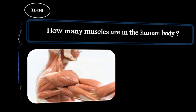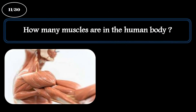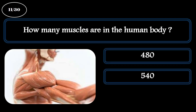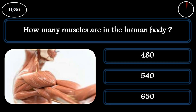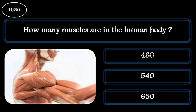Question 11. How many muscles are in the human body? A: 480. B: 540. C: 650. The correct answer is 650.